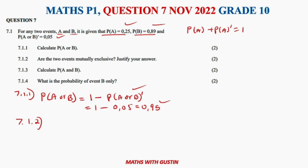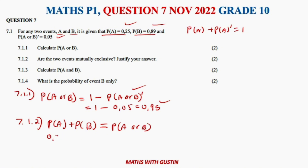Question 7.1.2 asks: are the two events A and B mutually exclusive? For events to be mutually exclusive, this formula must be satisfied: P(A) plus P(B) should equal P(A or B). Let's check — P(A) is 0.25 plus P(B) is 0.89, and this should equal P(A or B).